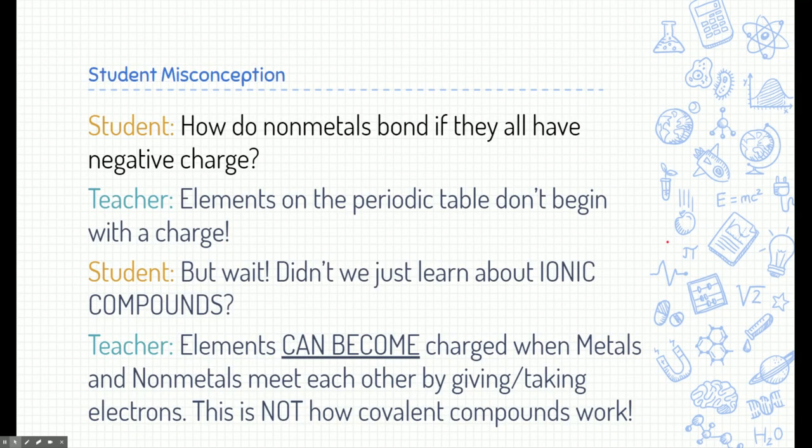Now, before I move on, some of you might be thinking, I've had student misconceptions, and I want to address that right now. Some students ask me, T-pop, how do non-metals bond if they all have negative charge? Now, I say, hey, elements on the periodic table actually don't begin with a charge. And students are like, wait a minute, we just learned about ionic compounds. And we even wrote on our periodic table all the charges of all the different elements on the periodic table. What do you mean they don't have charge? And I want to remind you guys that elements can become charged when metals and non-metals meet each other. They give and take electrons and become charged. But they don't start off charged. So don't get that misconception. Even though we wrote the charges on the periodic table, those are charges that the elements can become, not that they are charged. And in fact, this is not how covalent compounds work.